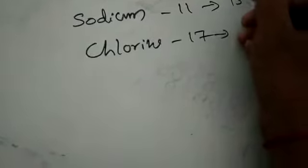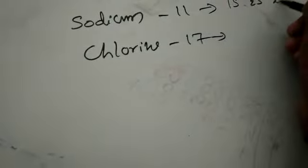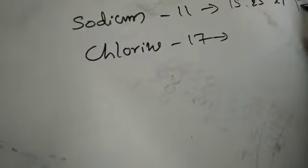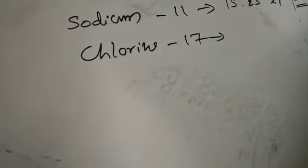Sodium configuration is 1s2, 2s2, 2p6, 3s1. So the last shell, that is the third, has one electron.